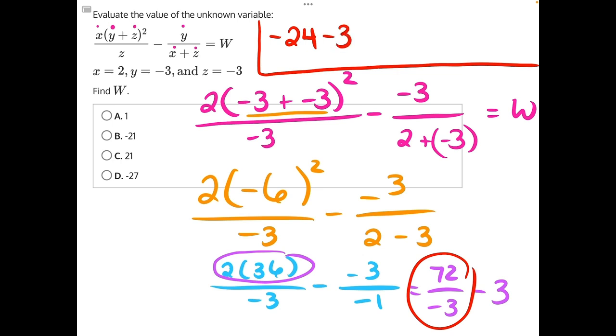And negative 24 minus 3, subtracting a positive is the same as adding a negative. So if it helps, you can think of it like negative 24 plus a negative 3, which would give you negative 27, making answer choice D our correct answer.